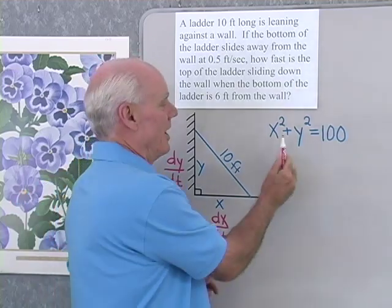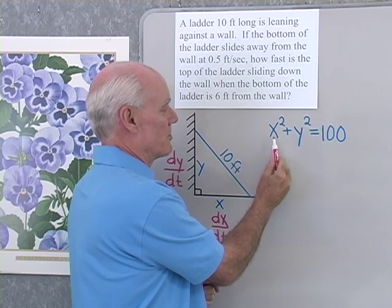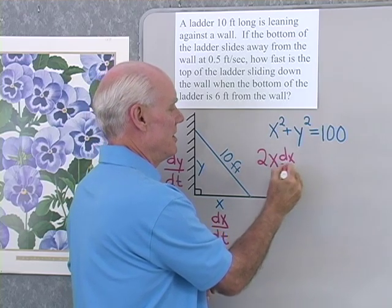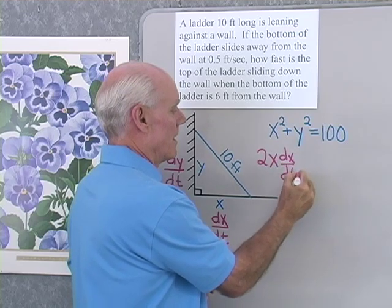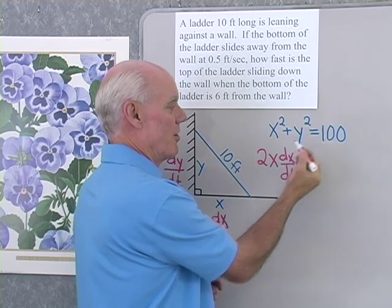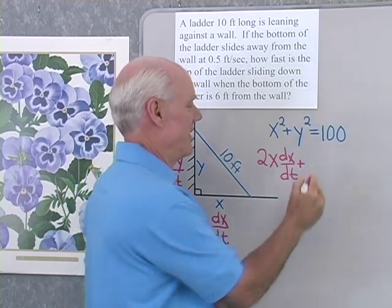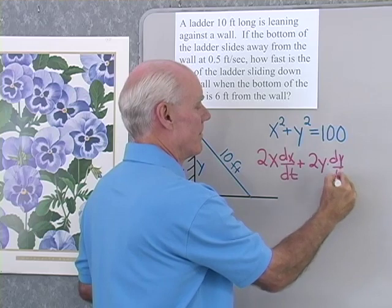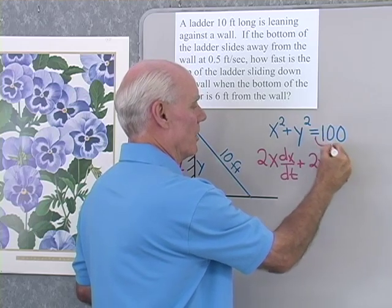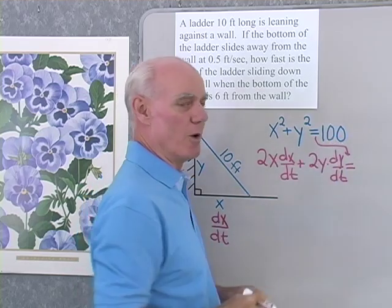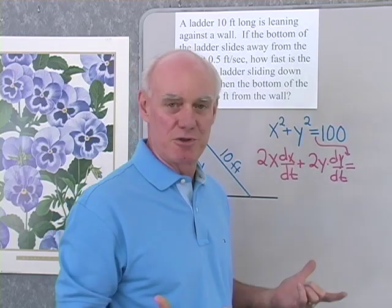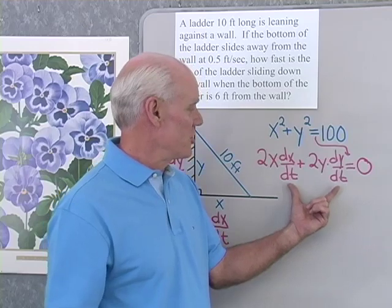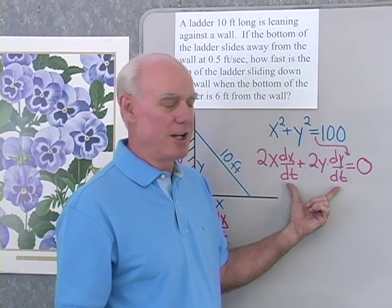Let's go ahead and do that. I'll differentiate x squared with respect to t. I get 2x dx/dt, plus — differentiating y squared with respect to t — I get 2y times dy/dt, equals the derivative of 100 with respect to t. 100 is a constant, so I end up with zero. So here's my relationship between the two rates, dx/dt and dy/dt.